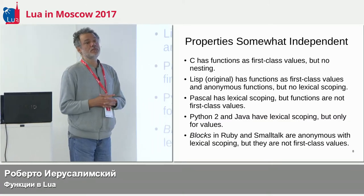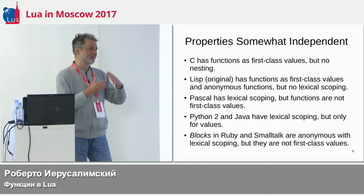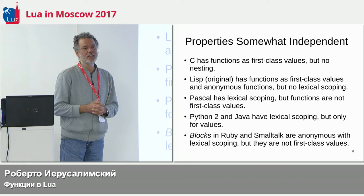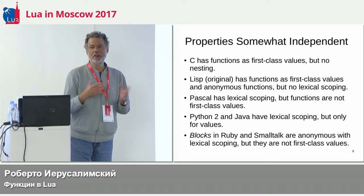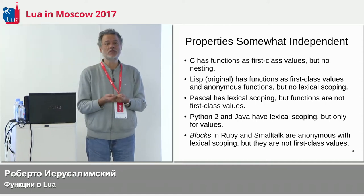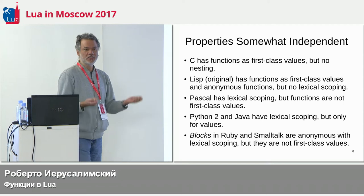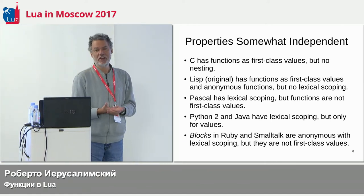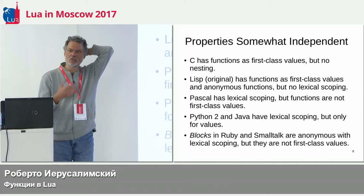People who know functional languages tend to think of all these properties as a unified thing, but actually they are very different concepts. Languages have had very different properties over time. In C, when you use pointers to functions, it's exactly the same as first-class values — we can pass functions as parameters, return them, store those pointers anywhere. But we do not have nesting, we do not have anonymous functions, and of course we do not have lexical scoping.